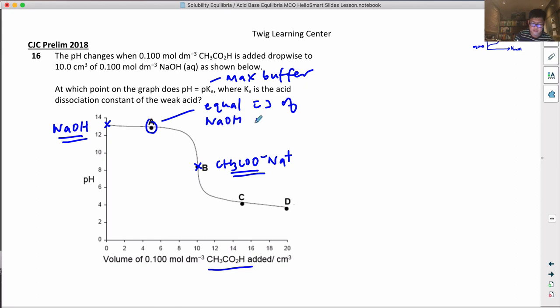This is definitely not a buffer. A buffer must have a weak acid and a conjugate base, or a weak base and the conjugate acid. This is a strong base so it's not a buffer.